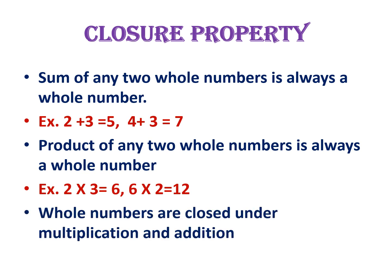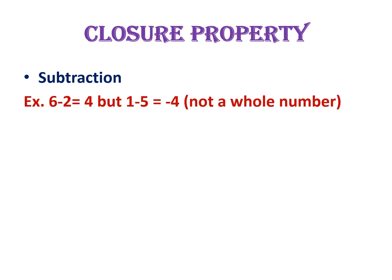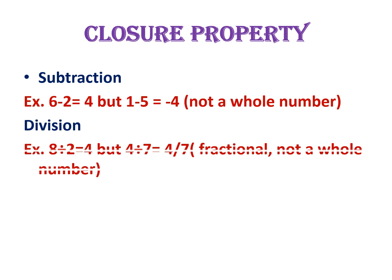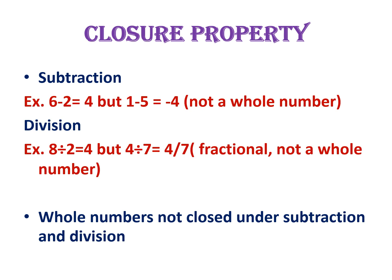Any two whole numbers we are multiplying will give us another whole number. But in the case of subtraction and division, this is not possible. Because if we subtract a bigger number from a smaller one, we will get an integer. For example, 1 minus 5 is equal to minus 4, and minus 4 is an integer, not a whole number. Also, in division, we may get fractional numbers in some cases. So we can say that whole numbers are closed under addition and multiplication, but not under subtraction and division.